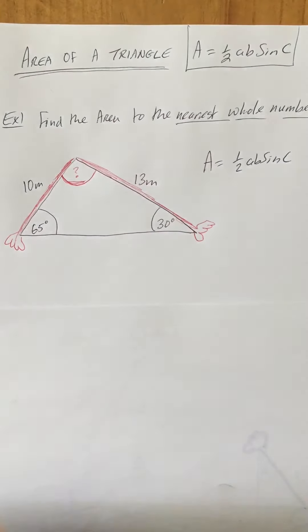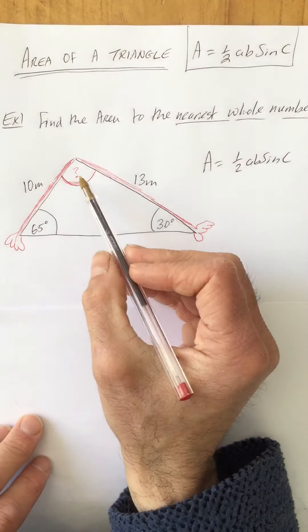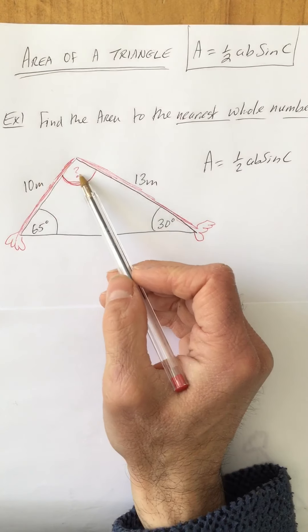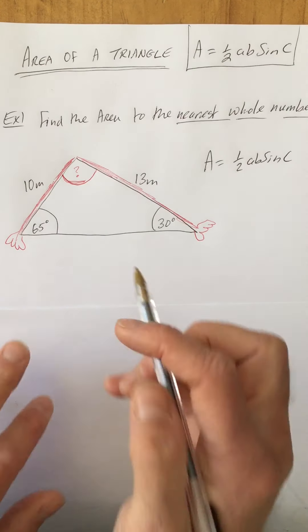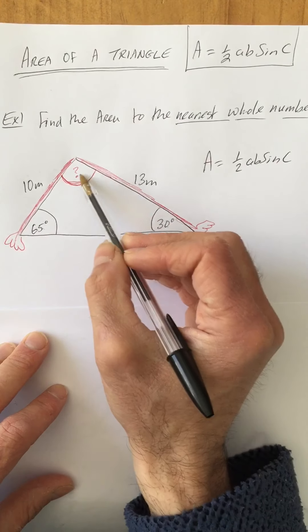But at the moment it looks like we don't know that angle, so before I can use my formula I need to figure out this angle. Is it possible to find out this angle? Well, the answer is yes. We know this is 65, we know this is 30, and what do the three angles in a triangle add up to?